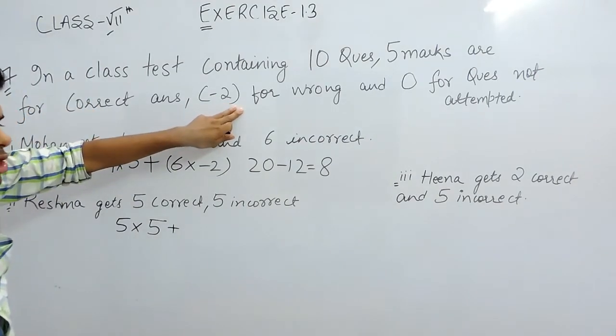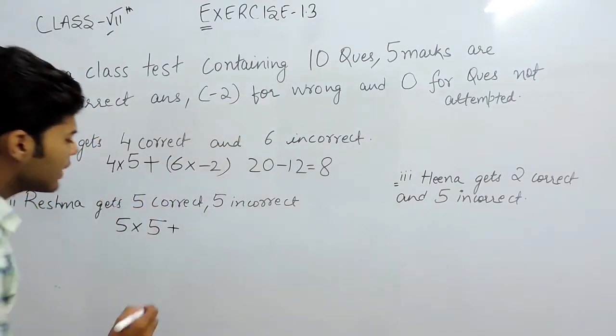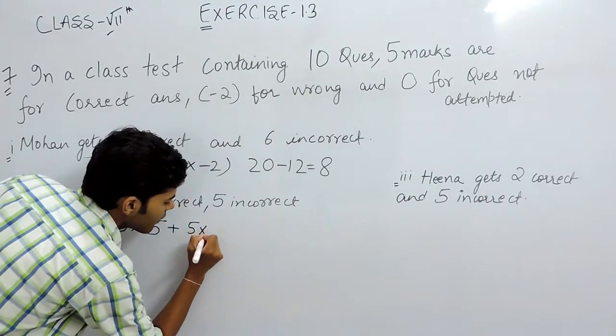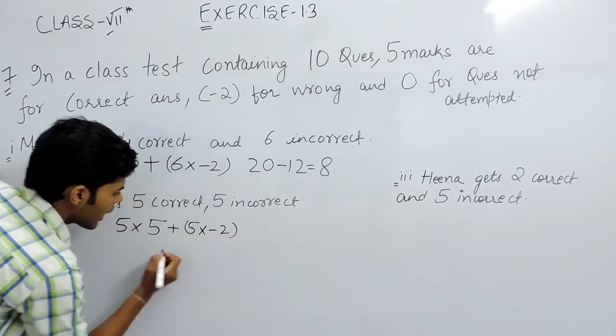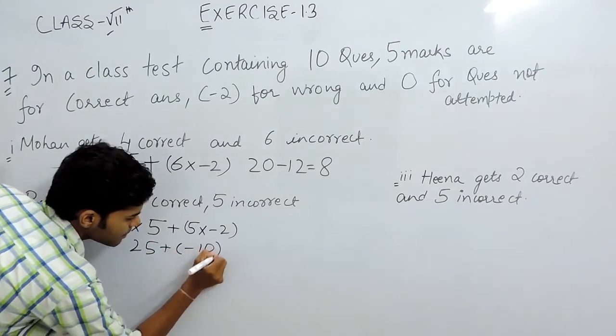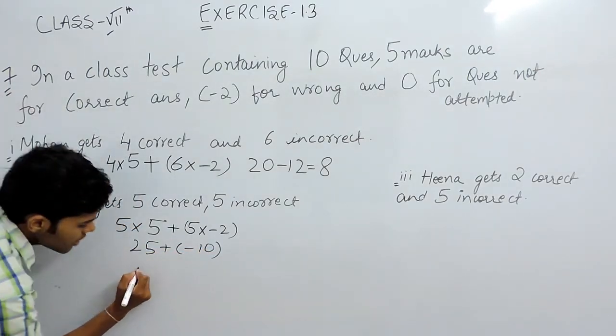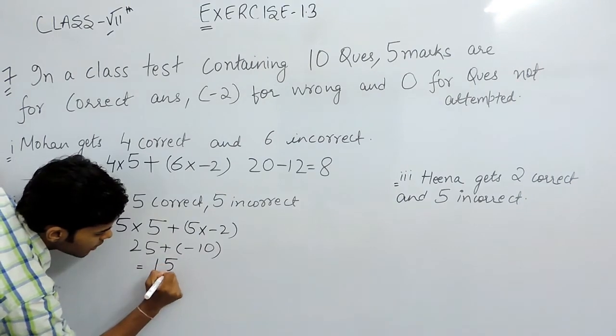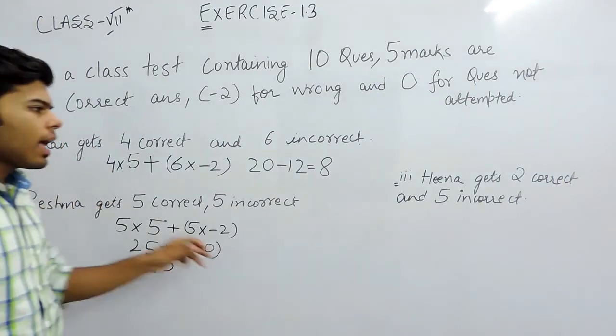For 1 incorrect, we are taking minus 2. So for 5 incorrect, we will take 5 multiplied by minus 2. That will be 25 plus minus 10. Plus and minus is minus, so we will subtract these and the answer will be 15 marks.